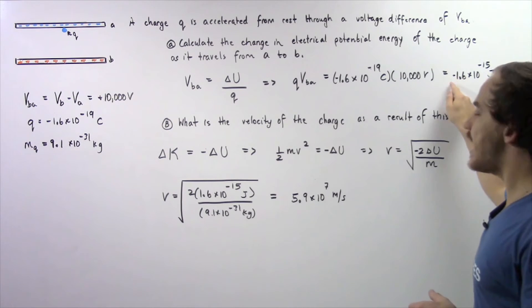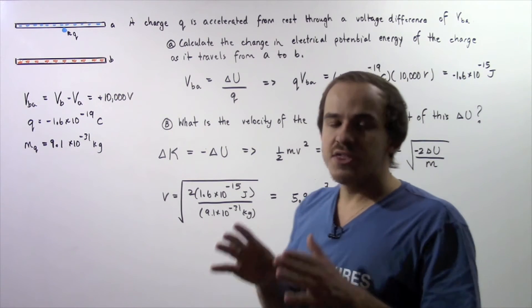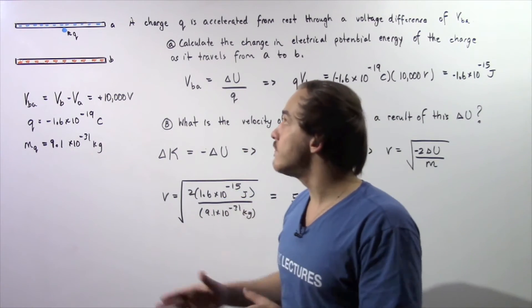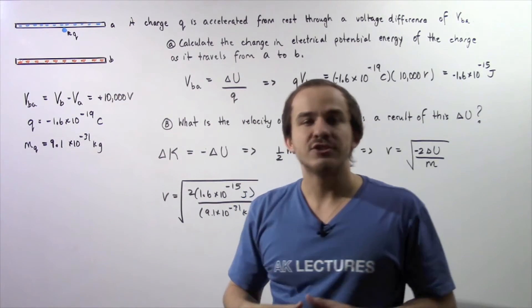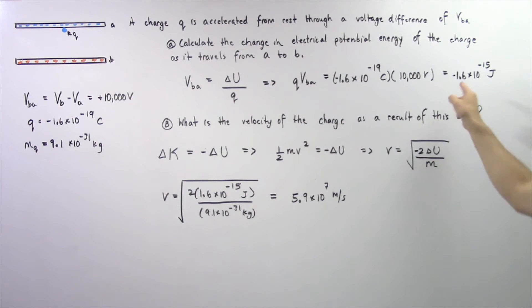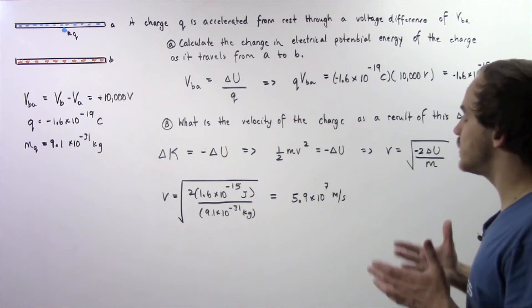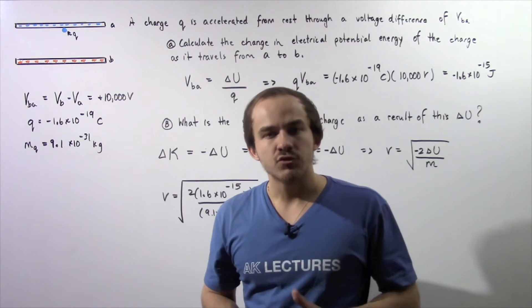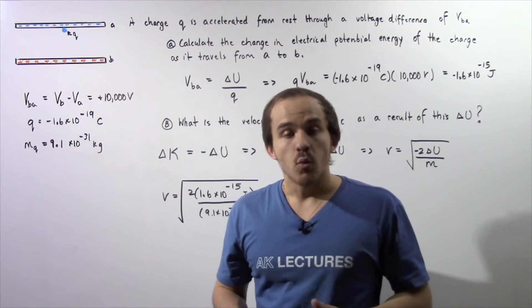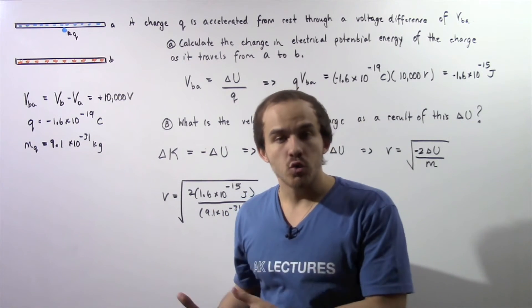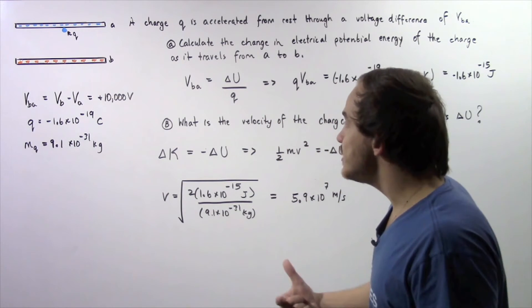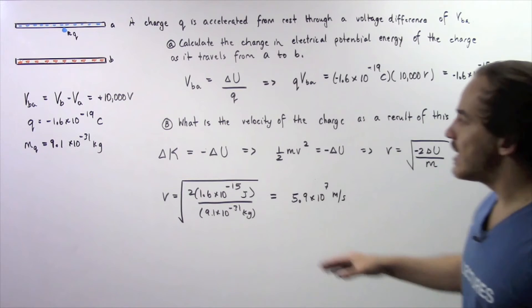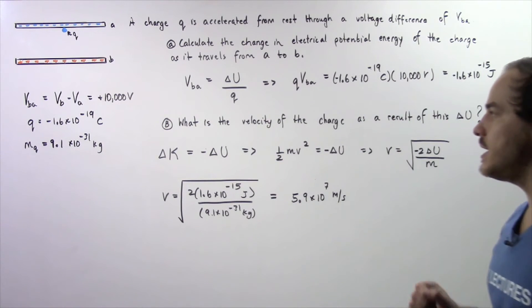This negative sign simply means that when our electric charge travels from A to B, it loses this quantity of electric potential energy. That energy goes into increasing the kinetic energy of our electric charge — specifically its velocity — and that leads us into part B.